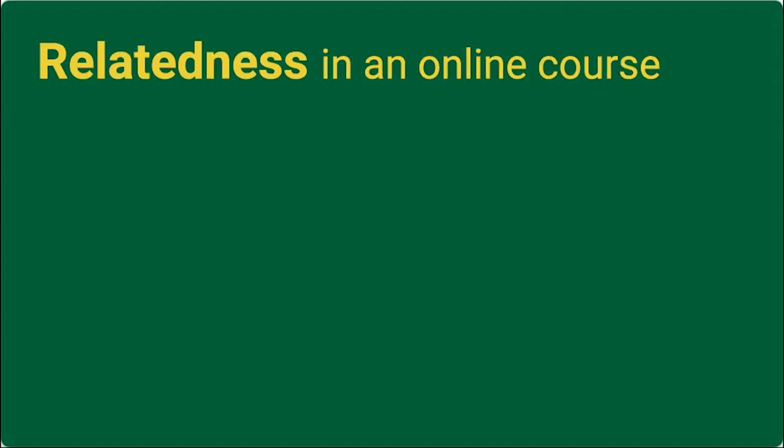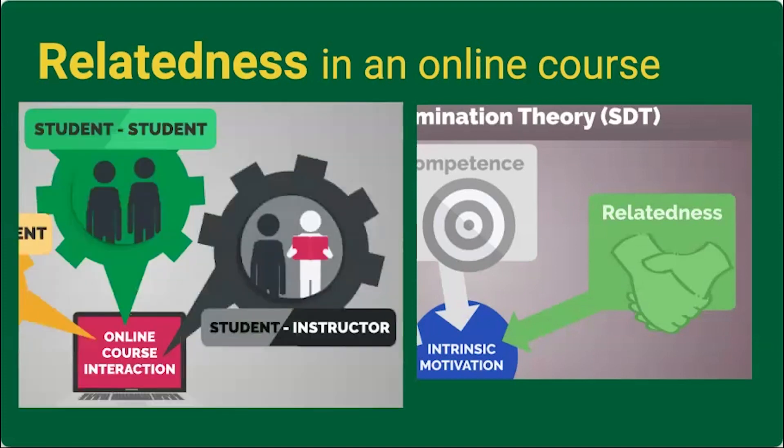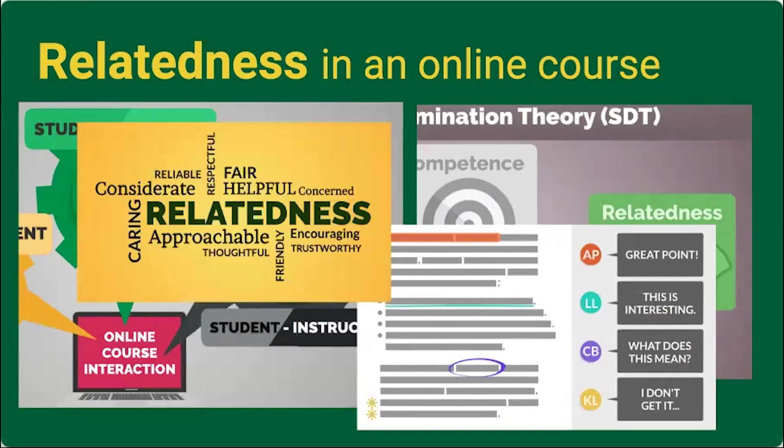So that is a lot for relatedness in an online course. I have four images for you to summarize. Relatedness is part of the self-determination theory. It's important to consider when you're planning and building and delivering your online course. You have student-student interactions to consider, get them talking to each other. The student-instructor interactions, that's your rapport with students. Those are the aspects you want to consider when you're looking at your teaching strategies and materials. And for students, you get them talking to each other and for the student to instructor, that's your rapport building.